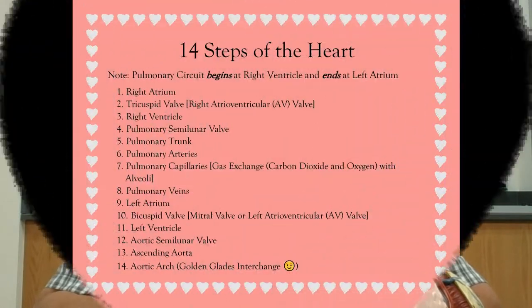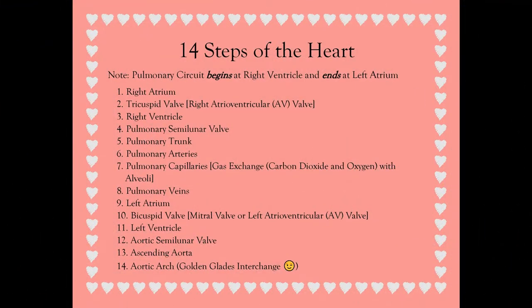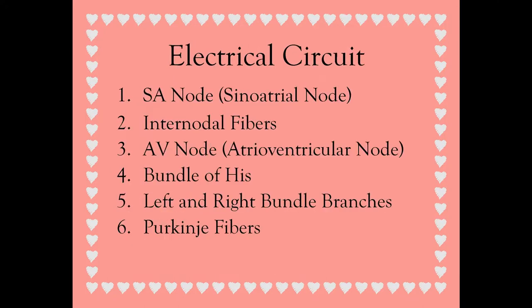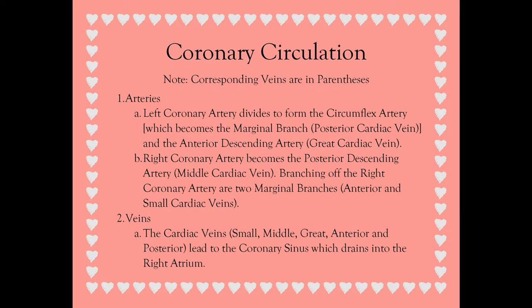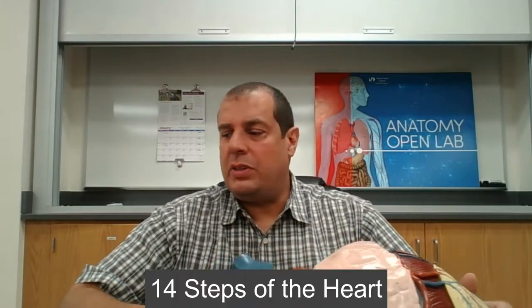In this video I'm going to go over the heart using this jumbo heart model. The first thing we'll cover is the 14 steps of the heart — how blood flows through the heart to the lungs and back. The second step is the electrical circuit, how electricity travels through the heart. The third step is coronary circulation, how blood flows around the heart itself to provide nutrients and pick up waste.